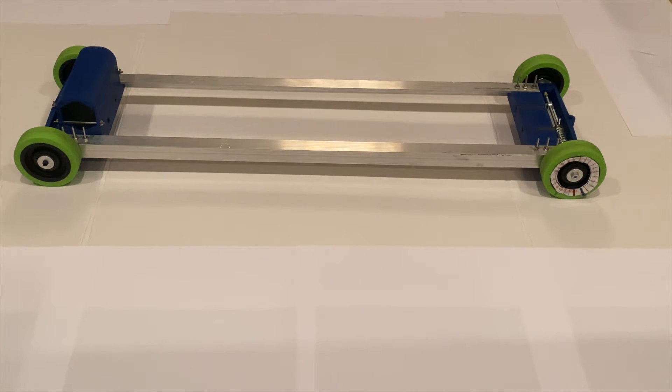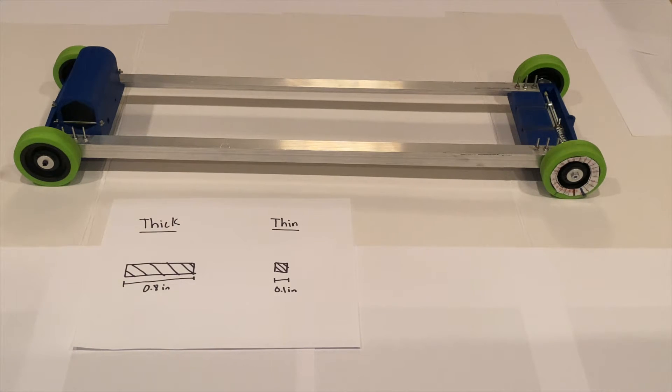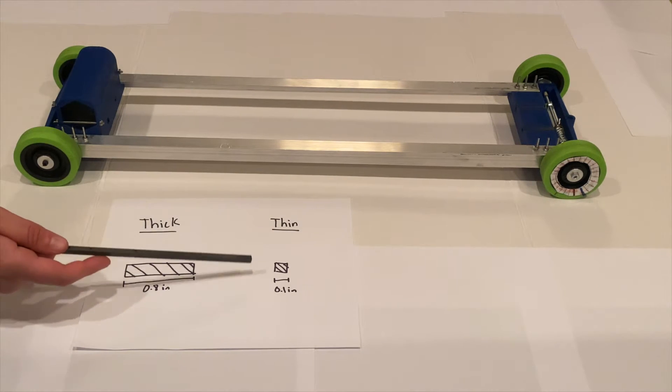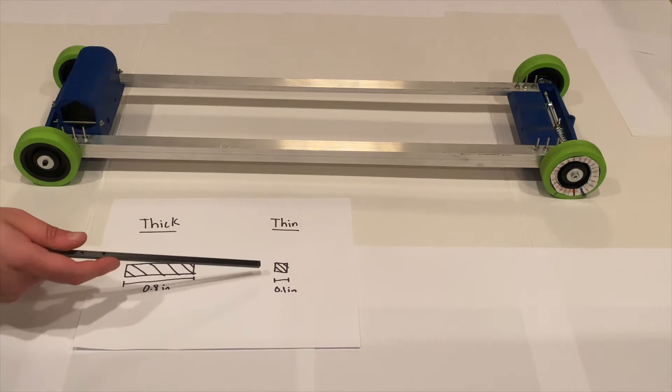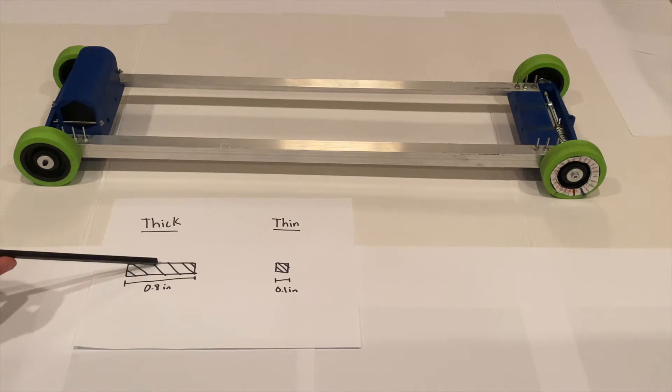But if you invest in a little bit thicker wheels, then you're going to achieve those results you're looking for. And here's why. So when you have a thin wheel that is such as a CD and let's say it's 0.1 inches thick, and you compare that to thicker wheels like this one that are 0.8 inches thick, you can see that with a thinner wheel, you're going to get less contact with the ground than you will with a thicker wheel.